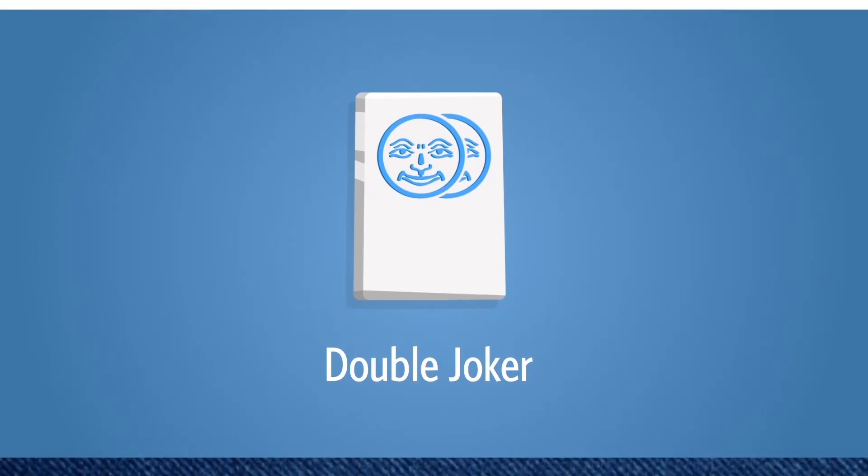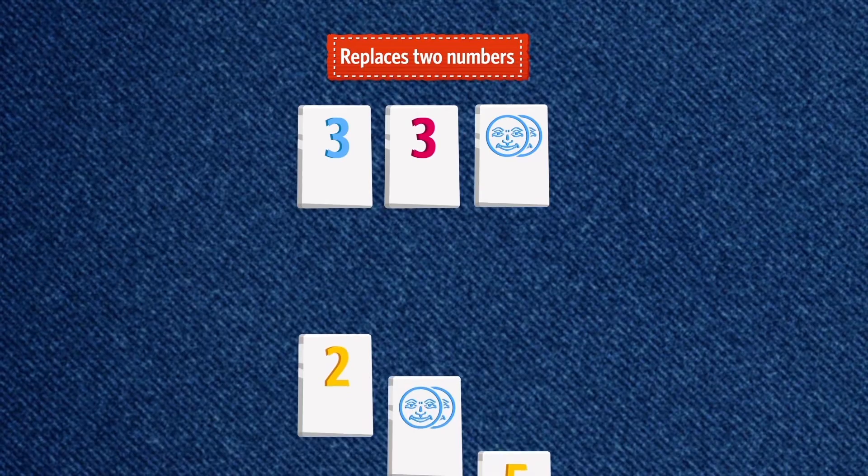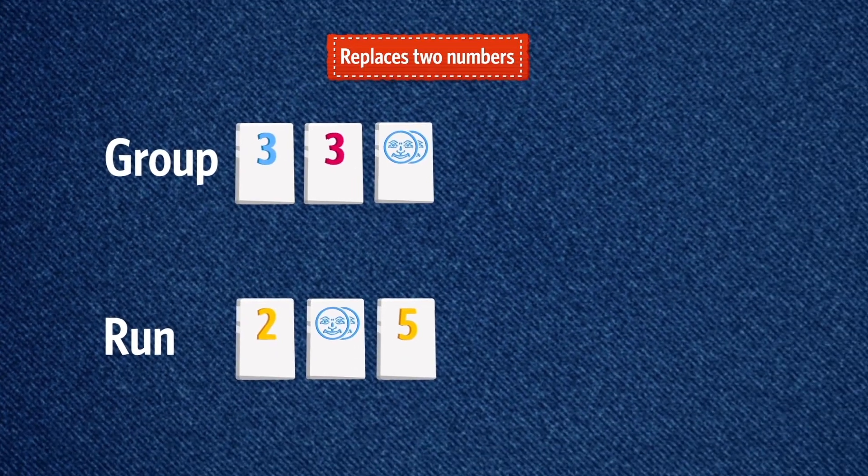Double joker. To free up the joker, replace it with two tiles from the table, from your rack or a combination of both. The double joker can be used in sets of runs and groups.